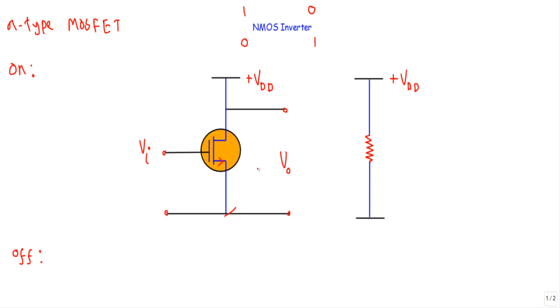This is the symbol of an N-type MOSFET. We control the property of this N-type MOSFET by applying gate voltage, which I have denoted here with VI.